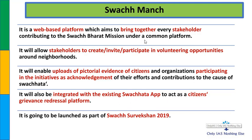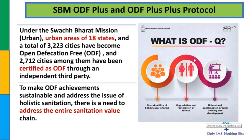2017 में PM नरेंद्र मोदी द्वारा स्वच्छ ग्राह बापू को कार्यांजली योजना के अंदर भी स्वच्छता की बात की गई थी. यह basically चंपारन movement की 100th anniversary थी. लगभग 2700 cities को independent third party द्वारा certification भी मिल चुकी है. ODF का main purpose quality - 'Q for quality' को improve करना है, जिसके लिए behavioral change लाना और restoration of toilets जरूरी है.